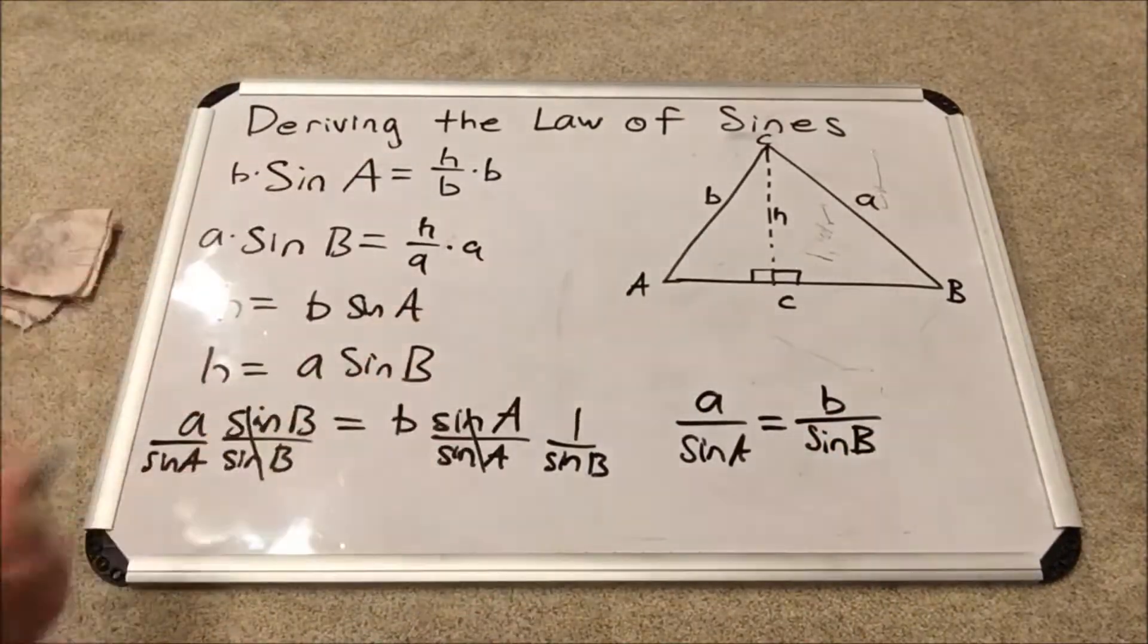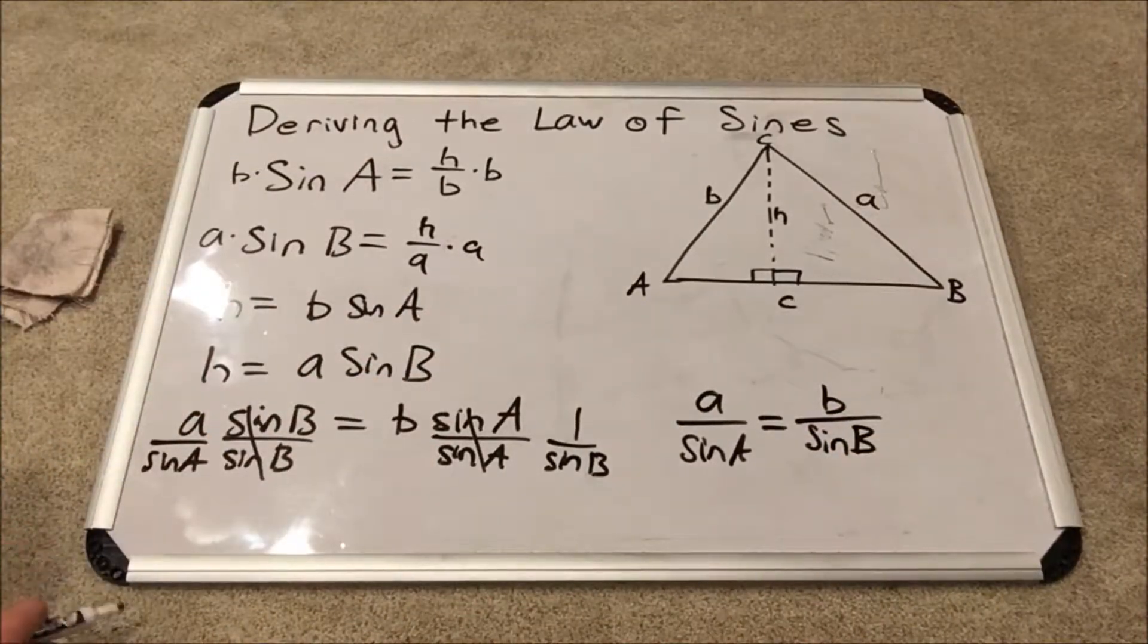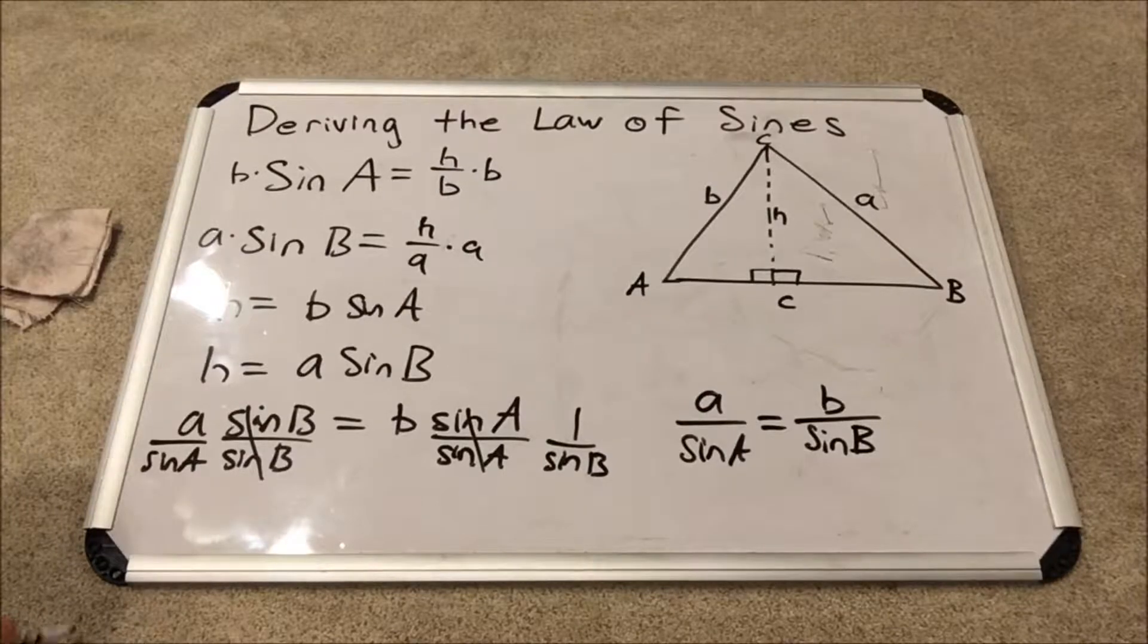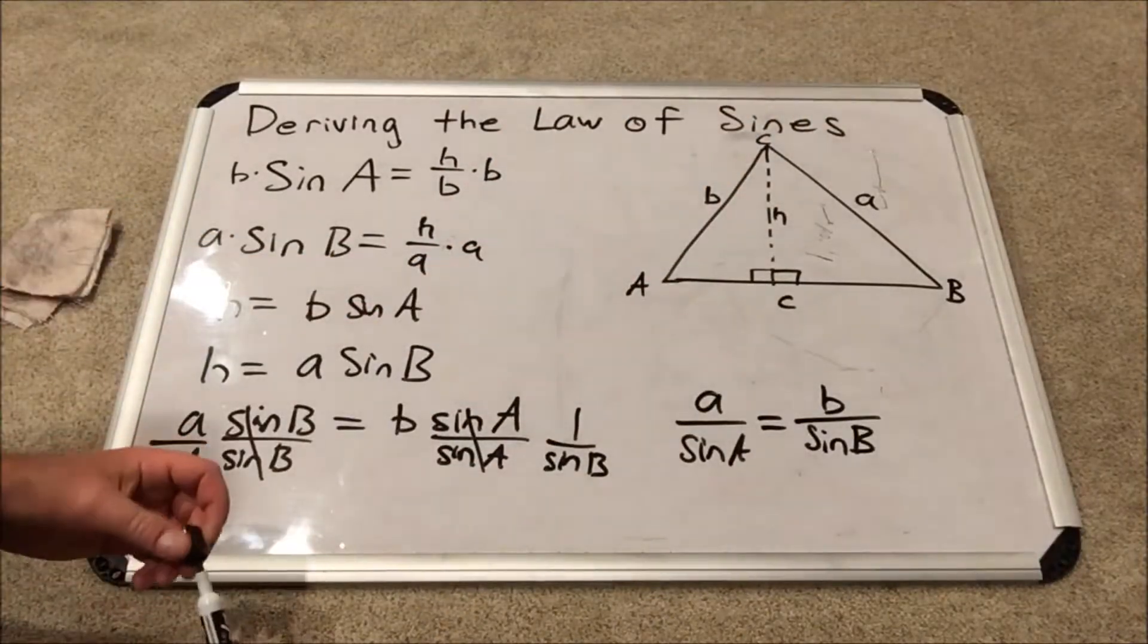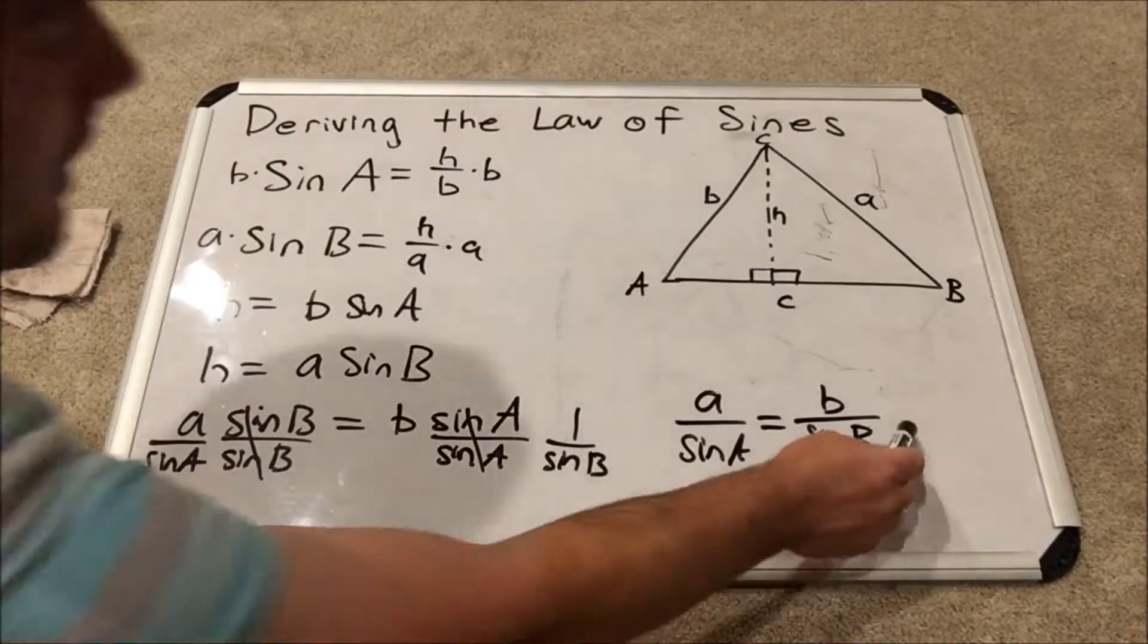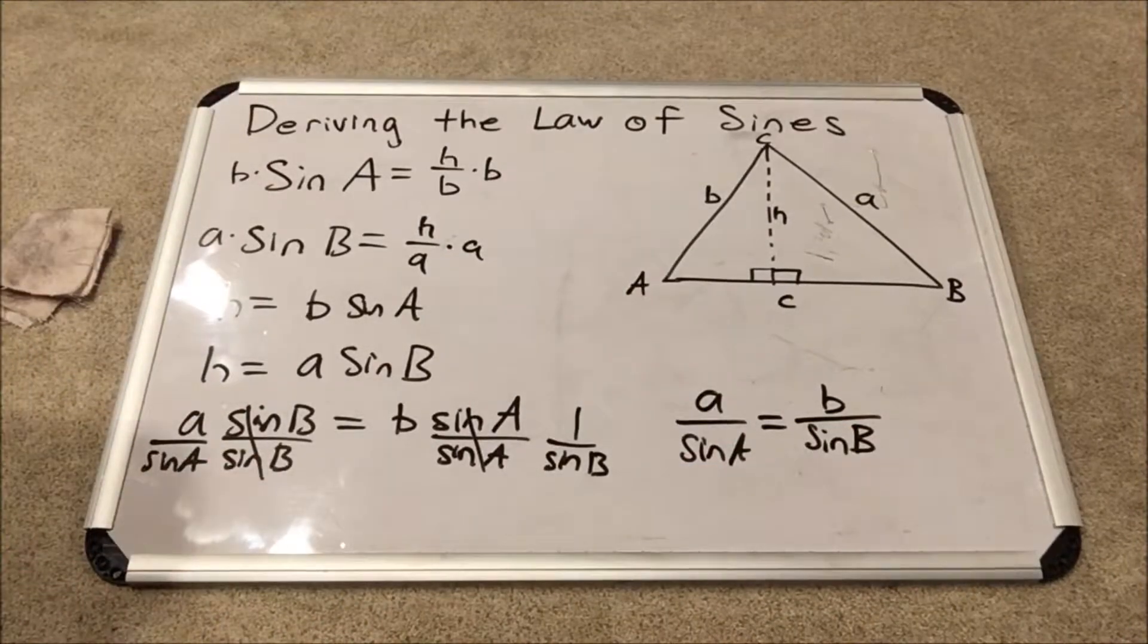Now some would say you've derived the law of sines. Well, we've derived part of the law of sines. How do we get C over sine of angle C? That apparently is equal to these two and is written here. Well, I'm going to show you that next.